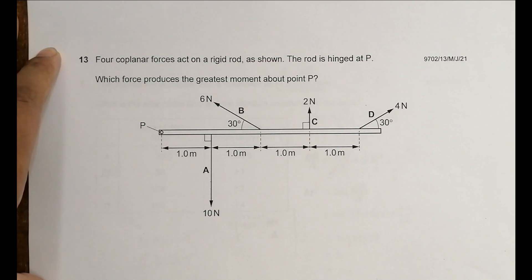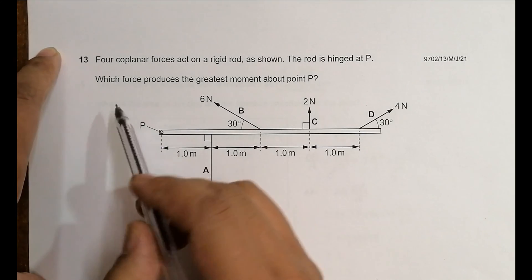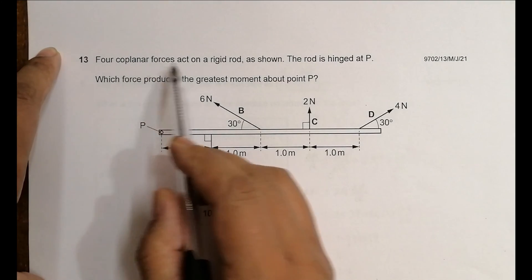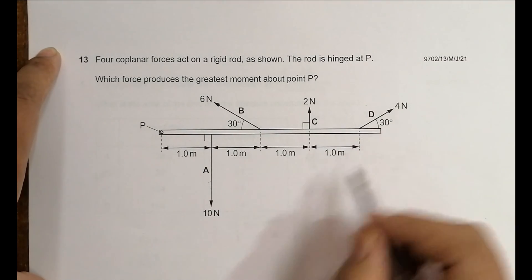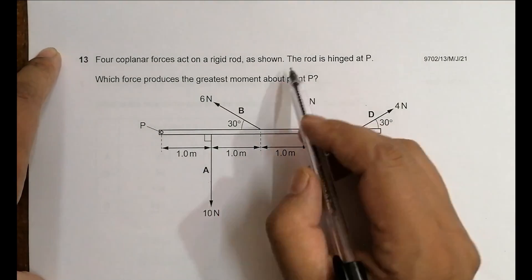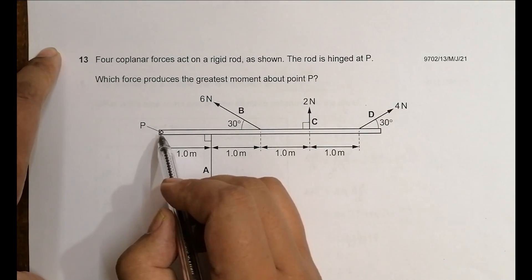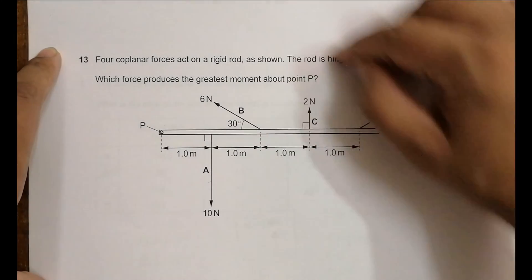So four coplanar forces act on a rigid rod. Rigid rod means its shape does not change - it might break, but it doesn't change its shape. The rod is hinged at P, so P is a fixed point here, meaning it can rotate like this. Which force produces the greatest moment about point P?